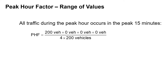So let's assume 200 vehicles during that peak 15 minutes. Our peak hour factor is going to be 200 vehicles in one 15-minute interval and zero in the other three. So we have 200 plus zero plus zero plus zero in the numerator, and four times 200 in the denominator. This gives us 200 divided by 800, which is 0.25. So the minimum peak hour factor you can have is 0.25.